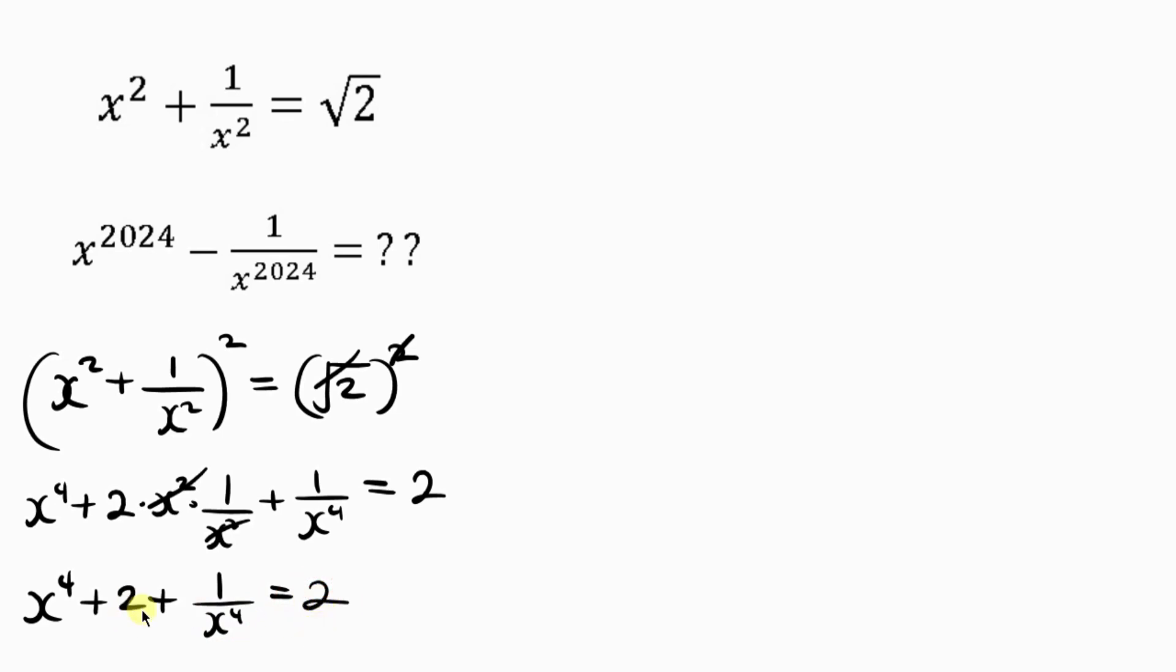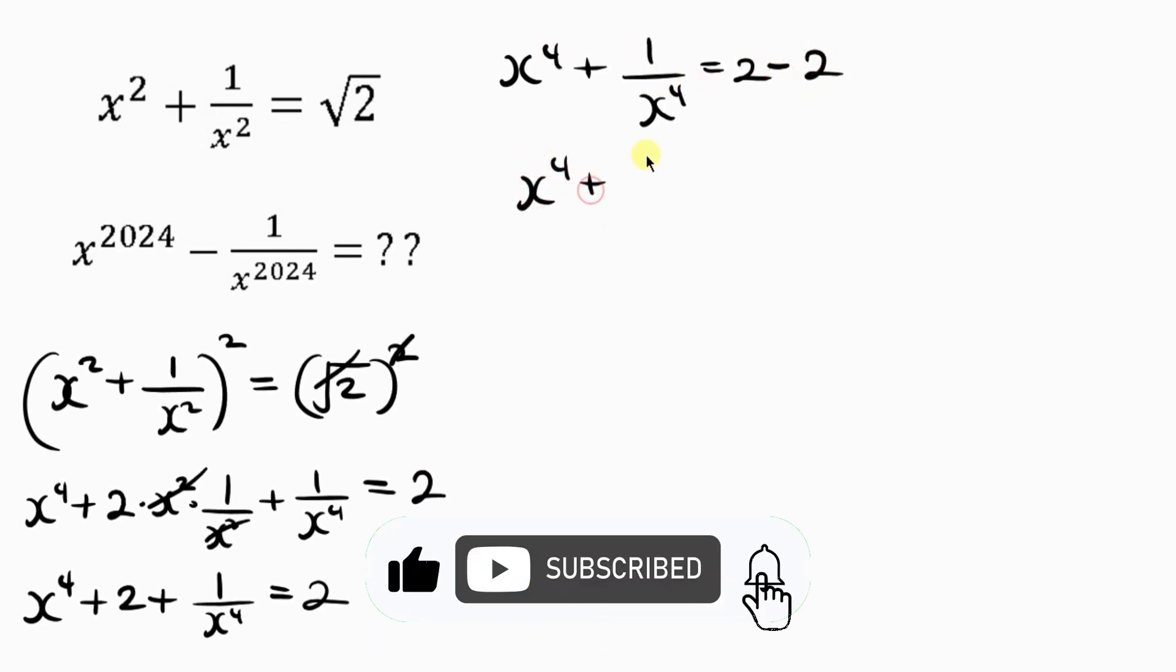Our next step is to move this 2 to the right hand side. I'm going to be having x to power 4 plus 1 over x to power 4 equal to 2. Now remember when 2 crosses to the right hand side it's going to become minus 2. This gives us x to power 4 plus 1 over x to power 4 equal to 2 minus 2 is 0.